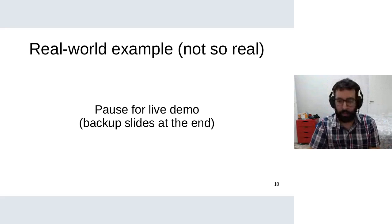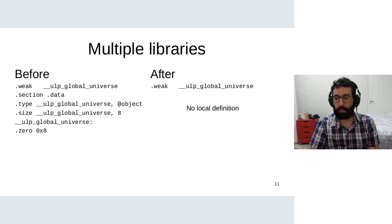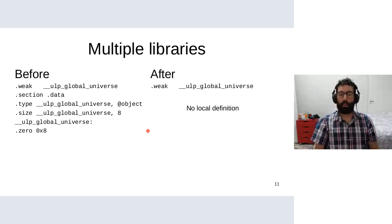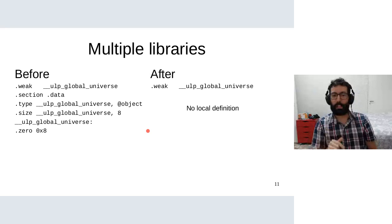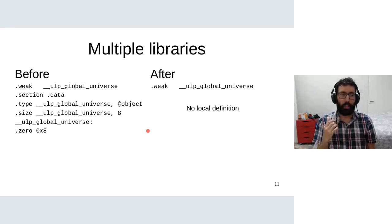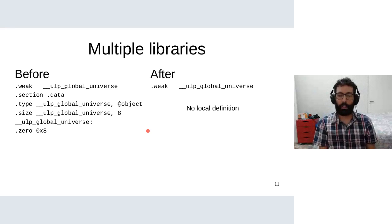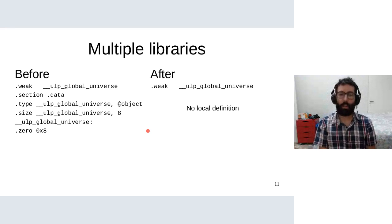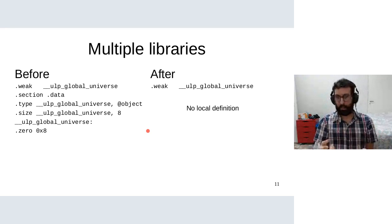That's it for the demo. While working on that demo, I faced a problem: the examples and tests available within the libpulp repository only ever patched one library at a time. But because NGINX uses both libssl and libcrypto, and I made both of them live-patchable, we're in a situation with multiple live-patchable libraries.